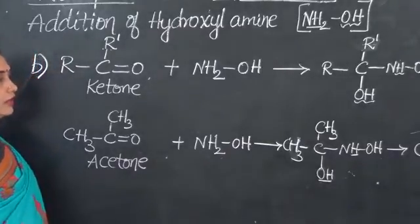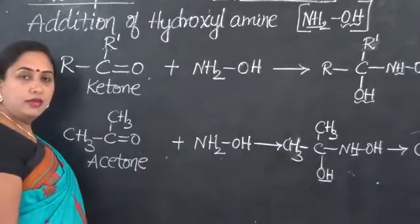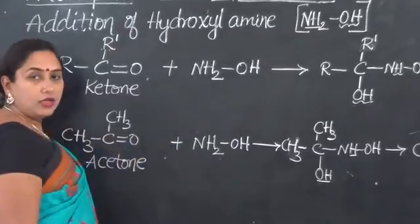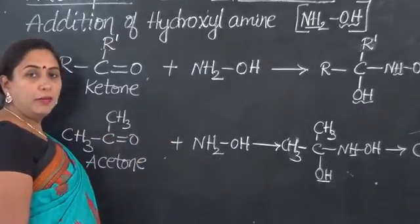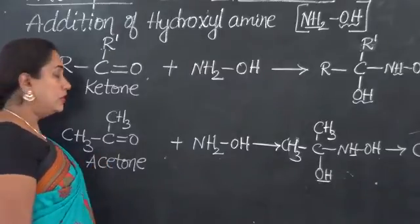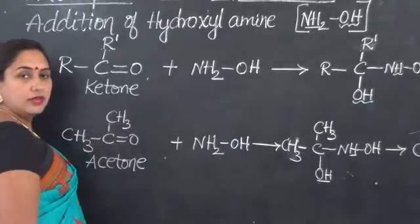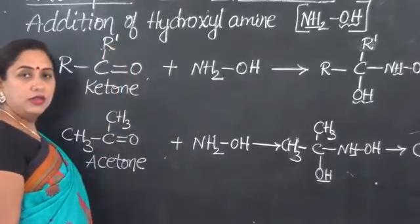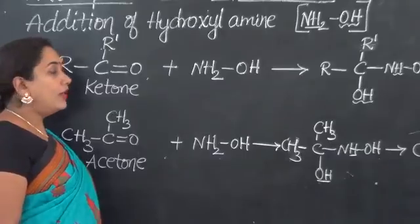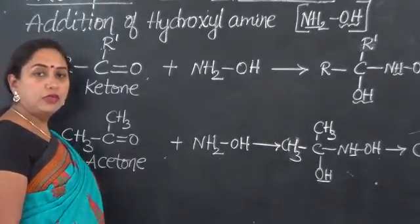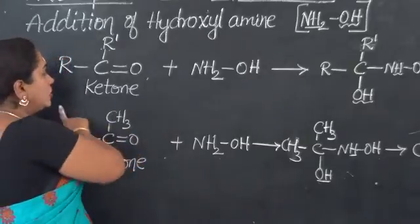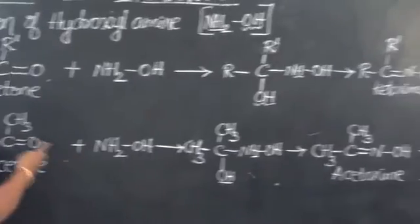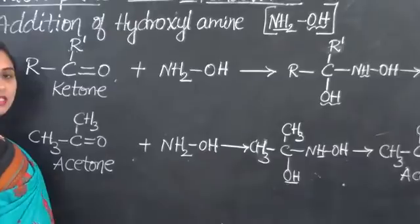As you have observed, both aldehydes and ketones form the same kind of product — oximes — when treated with hydroxyl amine. Remember that when writing the equation for a ketone, include two R groups, and for an aldehyde, replace one R with hydrogen. If you learn the general equation, you can automatically write the specific reaction for both aldehydes and ketones just by replacing R with the specific group.